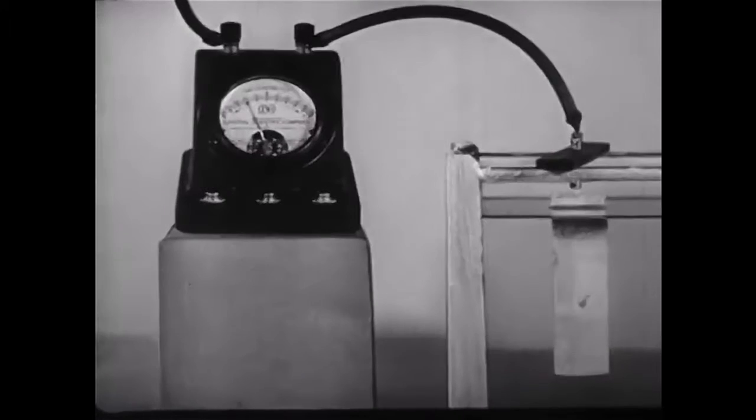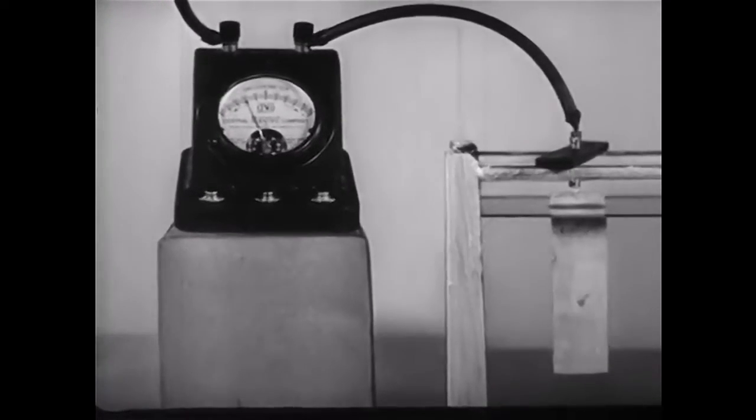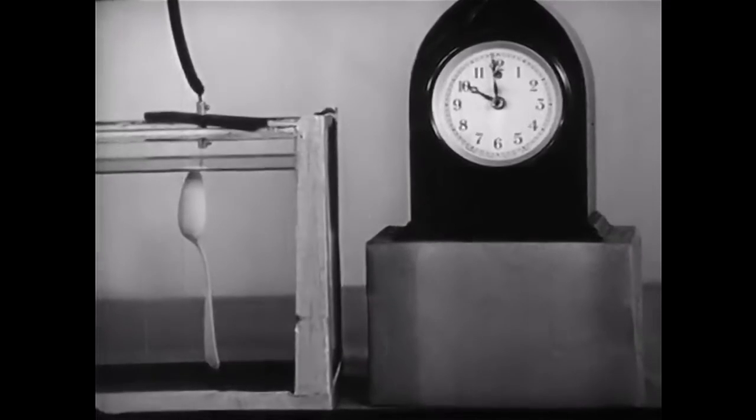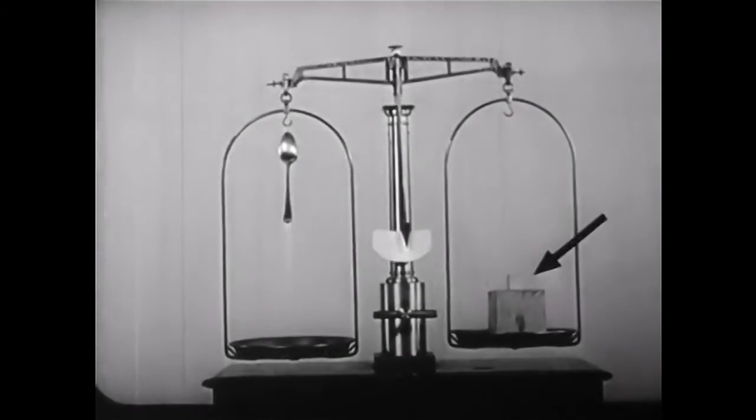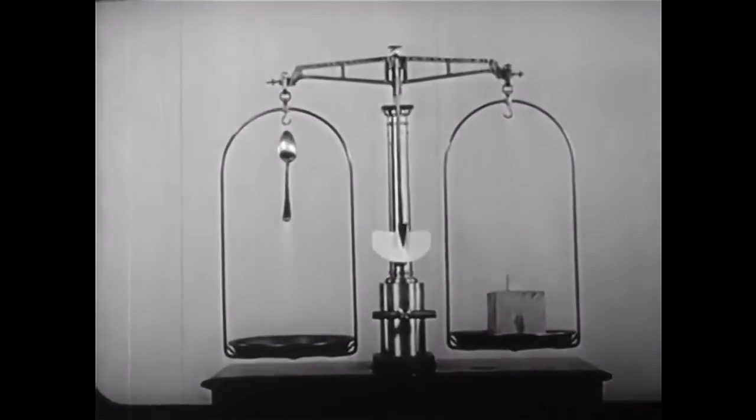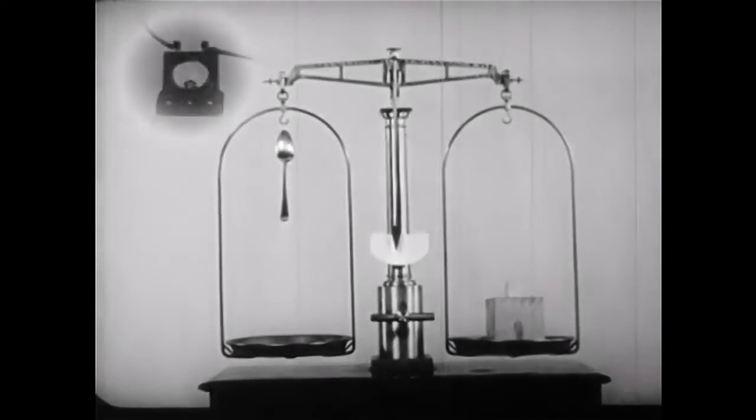We measure the current with an ammeter and the time with a clock. The amount of silver deposited during this time, represented by this additional counterweight, depends on the product of the current by the time.